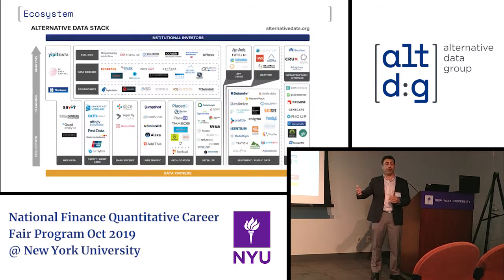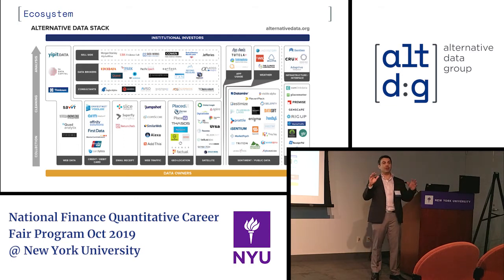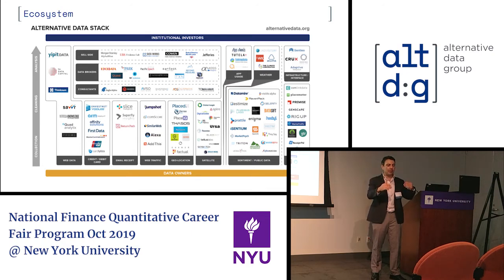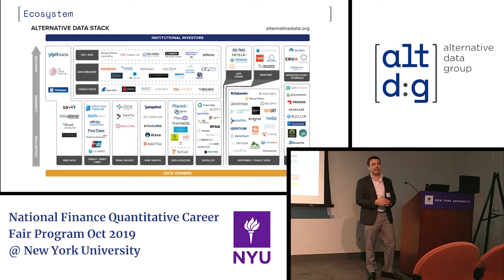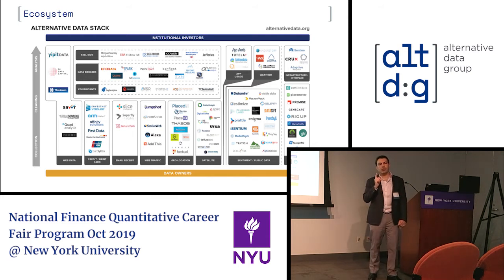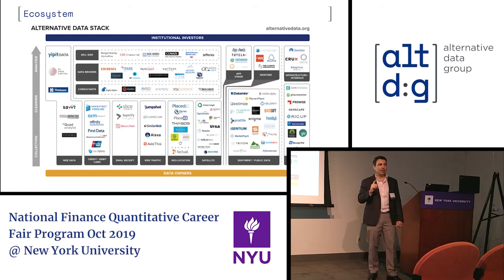They started, for free, publishing lists of originators, which was unheard of, because before them these lists were actually quite valuable. You could be a person or a company that just collects the names of the companies selling these data sets, and you can sell this list for $30,000. That's like saying, I know of a company named Bloomberg, and a couple of others that are like it — give me $30,000 and I'll tell you the names of those companies. It's crazy, but that's how it was.